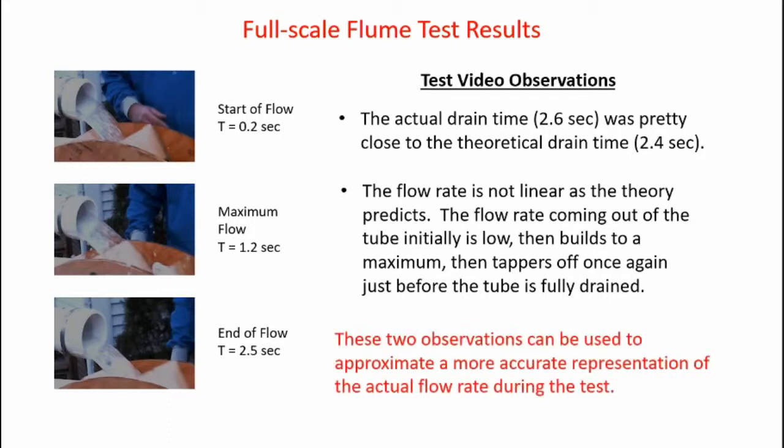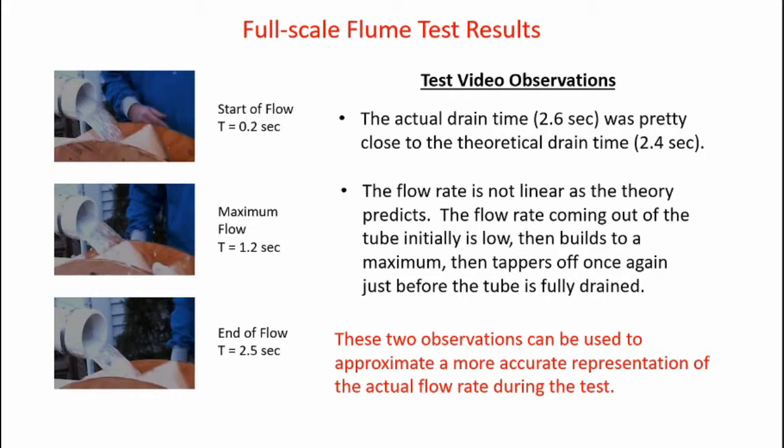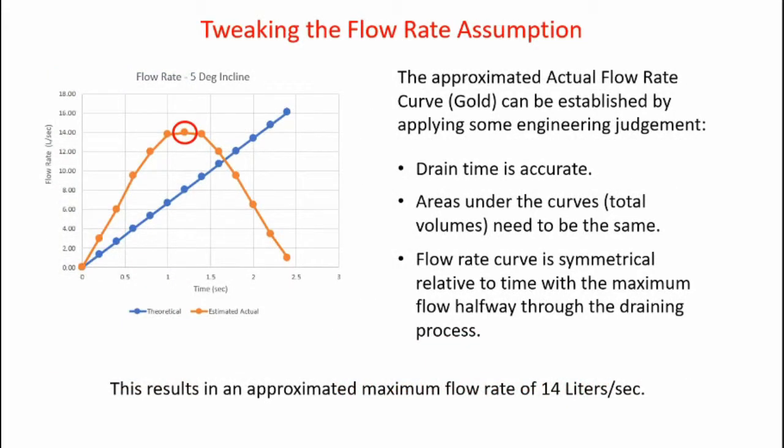These two observations can be used to approximate a more accurate representation of the actual flow rate during the test. The approximated actual flow rate, the gold curve, can be established by applying some engineering judgment. First, the drain time is accurate. The areas under the curves, the total volumes, need to be the same. So the area under the gold parabola needs to be the same as the area under the blue straight line. The flow curve is symmetrical relative to the time with a maximum flow halfway through the draining process. I manually created the gold parabola, trying to match the area under the curve to get a consistent flow rate between the two. This results in the approximated maximum flow rate of 14 liters per second, a little bit less than the theoretical flow rate.